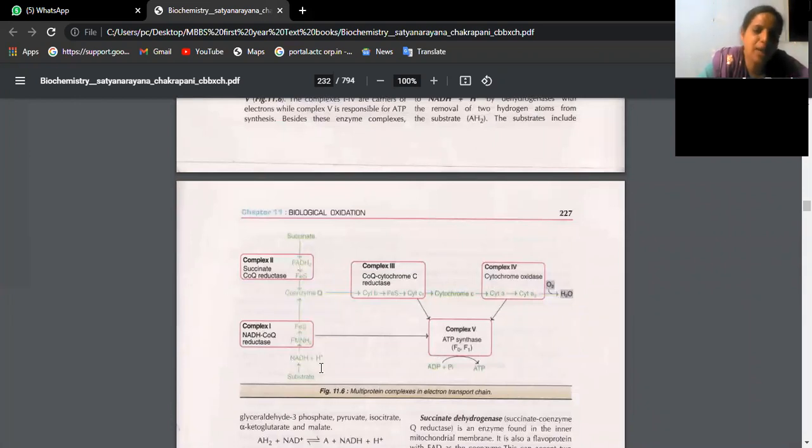All these enzymes are concerned with transfer of these hydrogen ions. From the substrate you see NADH plus H is now transferring these hydrogen ions to FMNH2. From there it is transferred to FeS. So this is catalyzed by enzyme complex 1, NADH coenzyme Q reductase. We have complex enzyme 2 which is succinate coenzyme Q reductase which is also transferring these hydrogen ions from succinate, FADH to FeS.